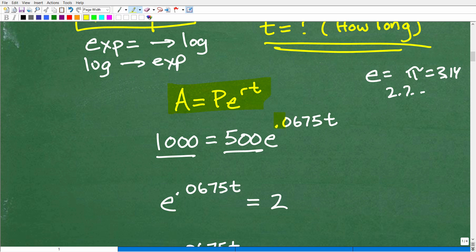And now we have our interest rate, 0.0675, right? And then again, we have our variable t. So this is the setup.